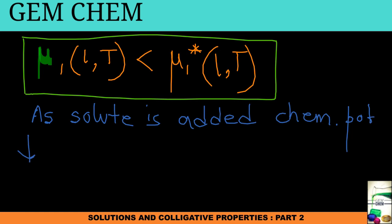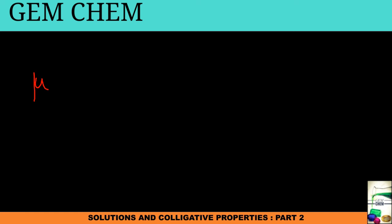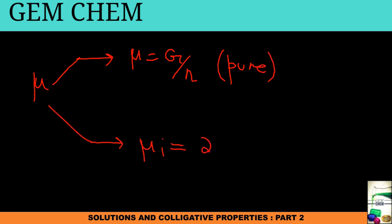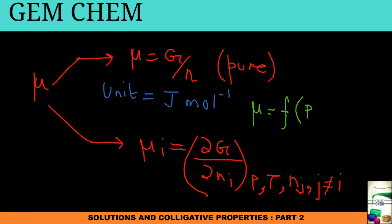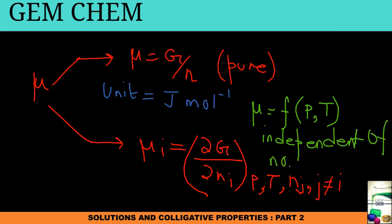To summarize what we have seen about chemical potential: for a pure substance, mu equals G by n; for a mixture, mu_i equals delta G by delta n_i at constant P, T, and n_j (j not equal to i). Chemical potential is an intensive property. Its unit is joule per mole. Mu is a function of pressure and temperature and is independent of number of moles, since we are dividing by number of moles.